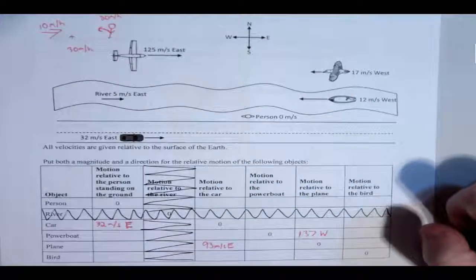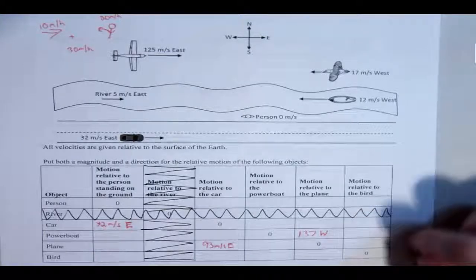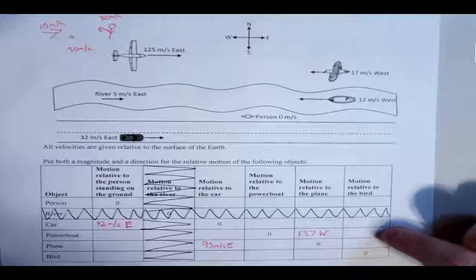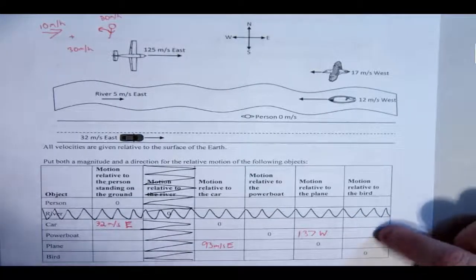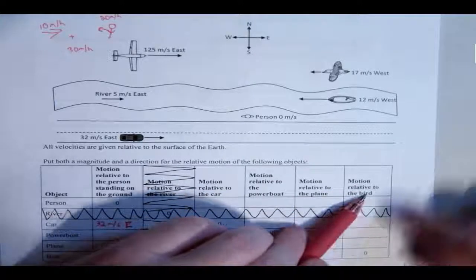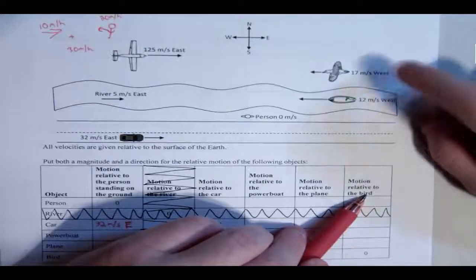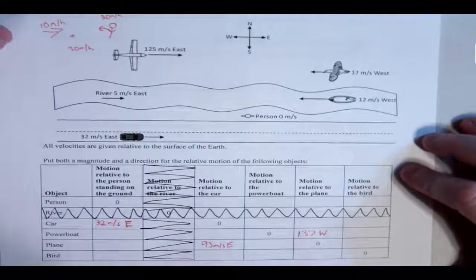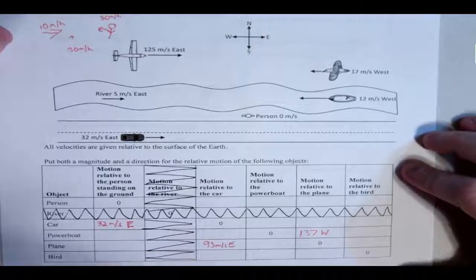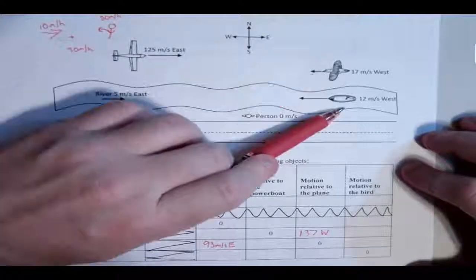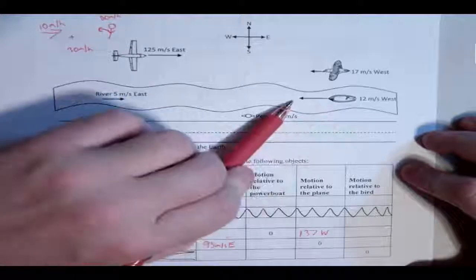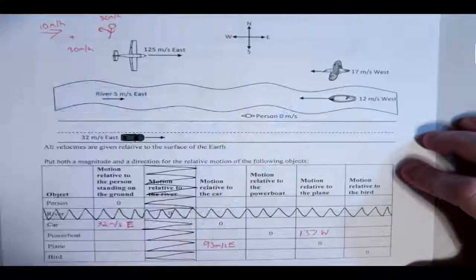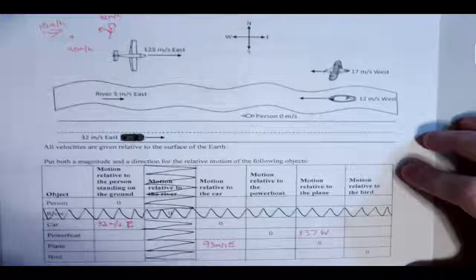So let's do the bird relative to the powerboat. Now we're gonna get a little tricky, but it's still not that bad. Motion relative to the bird. So we're the bird. You're the bird's perspective, and you see this powerboat. You're going 17 meters per second west. The powerboat's going 12 meters per second west. So the powerboat, you're the bird. This boat is going slower than you. So you're passing this boat.